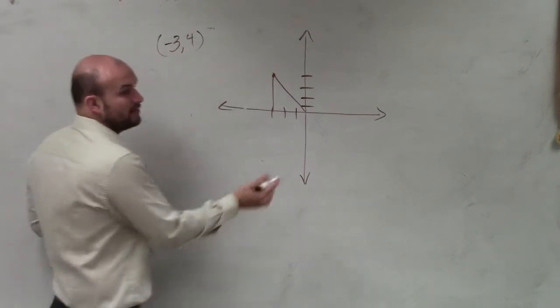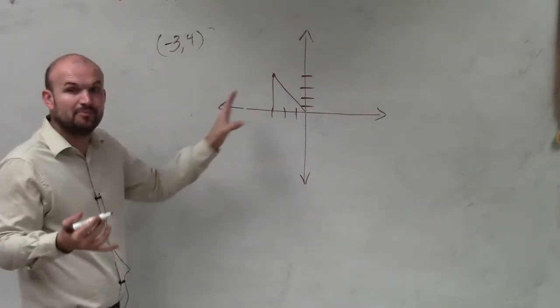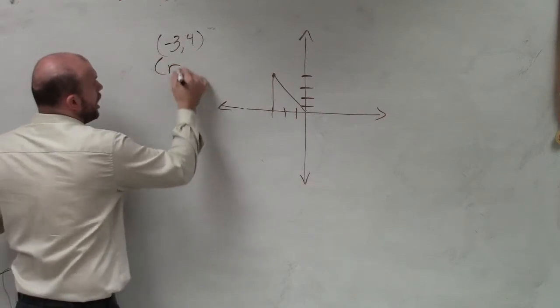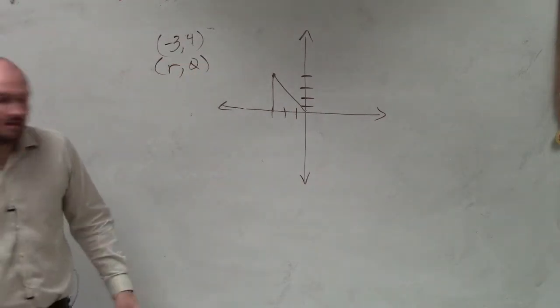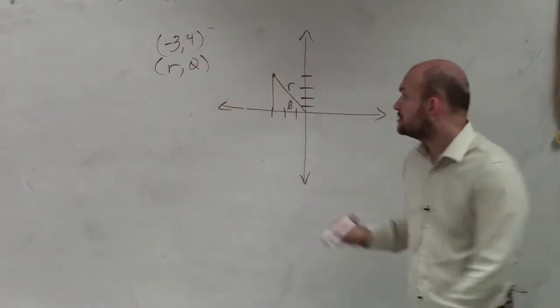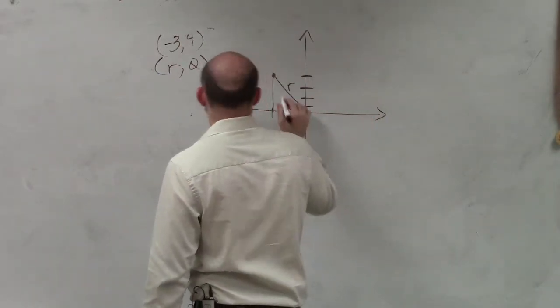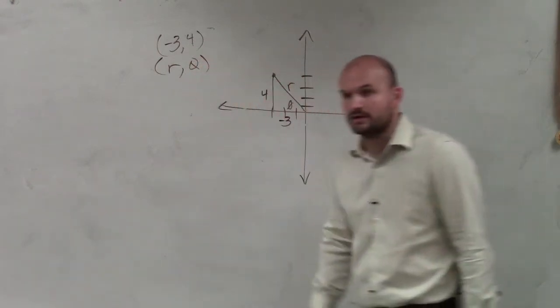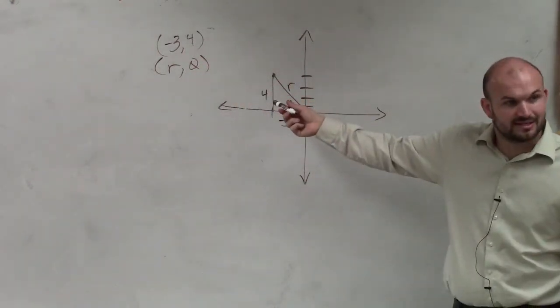Now, to be able to do this, to write this in a polar format, we need to know r and we need to know theta. So we need to know what this theta is and we need to know what the radius is. We know that this side is negative 3 and we know this side is 4. If I know this and I know that, can we figure out what the radius is?